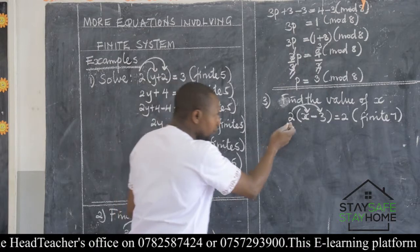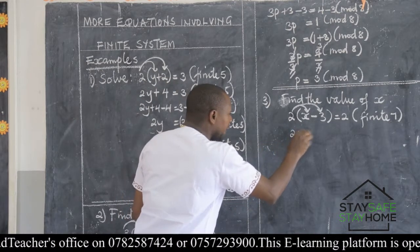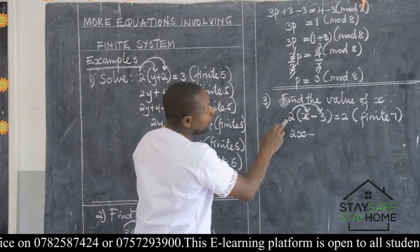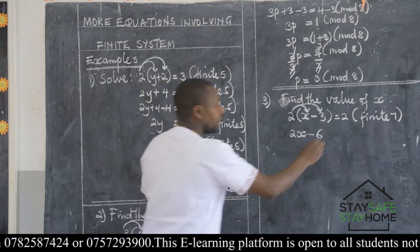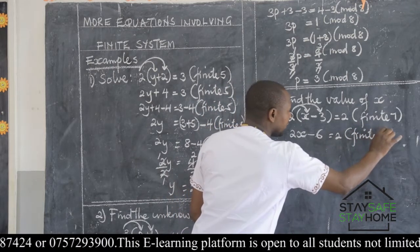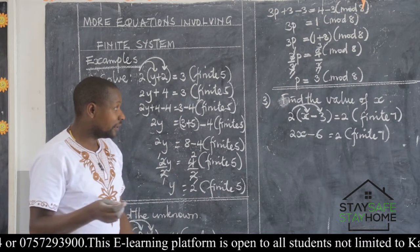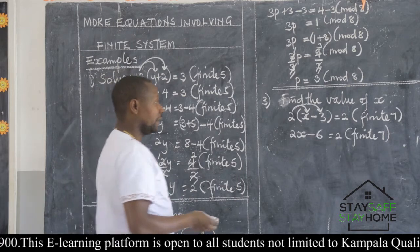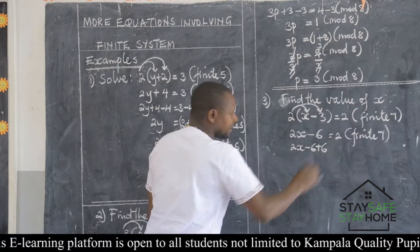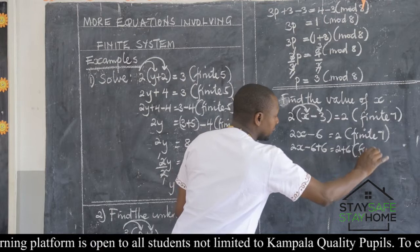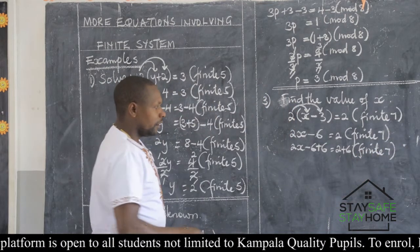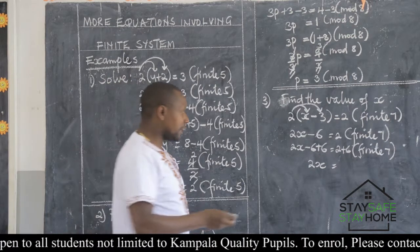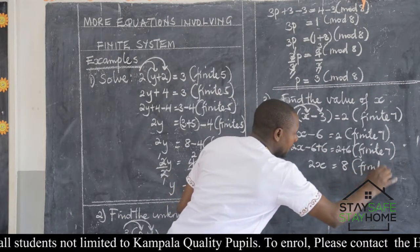Still, we shall follow the same route in terms of opening the brackets, and we shall maintain our subtraction sign. Then it will be 2 times X — do we get 2X or X2? It is 2X, not X2. Then we shall maintain our subtraction sign. Then we go back to 2 times 3, this will give us 6. Then this is equal to 2, and this is finite 7. We are going to eliminate by adding 6 to both sides. This will be 2X minus 6 plus 6 equals 2 plus 6. And this is finite 7.